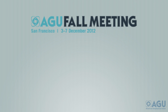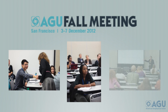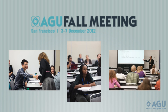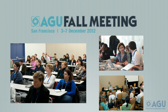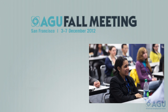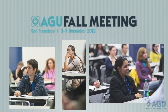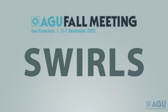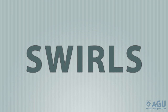This year, AGU will implement a new path for interdisciplinary collaboration at fall meeting. After reviewing the scientific program, we have identified, linked, and organized select sessions from the various sections into themes. These themes, called swirls, will provide fall meeting attendees with the opportunity to take an interdisciplinary walk through the week.